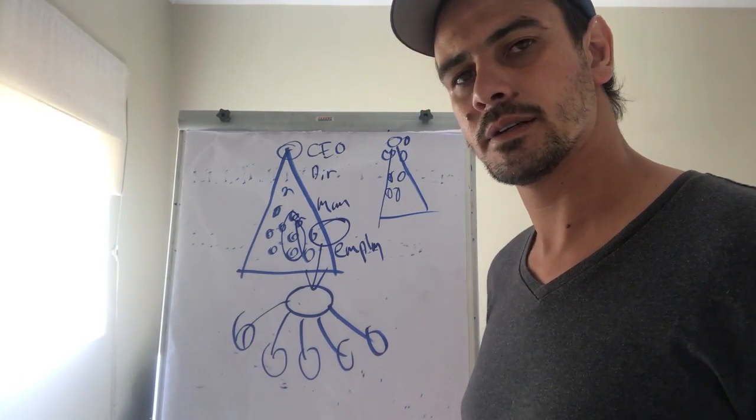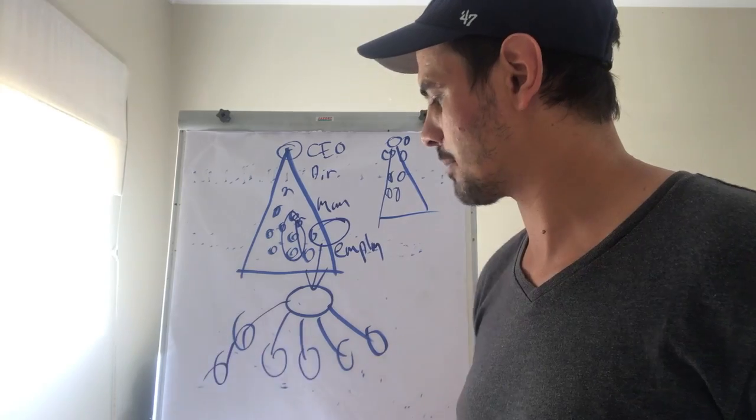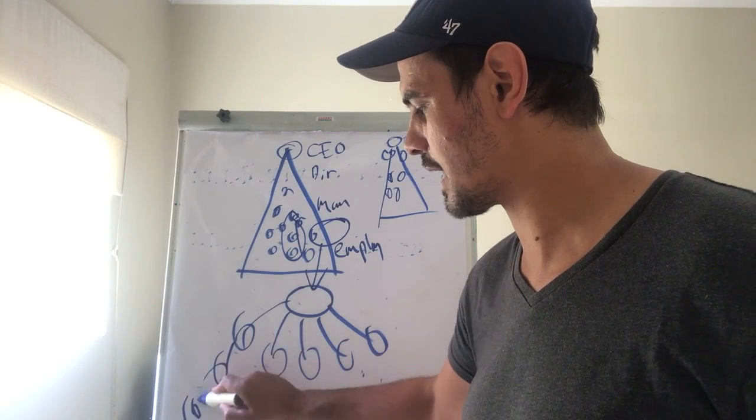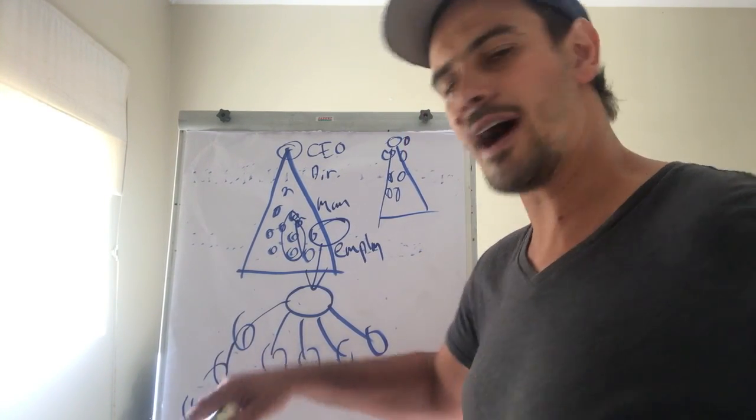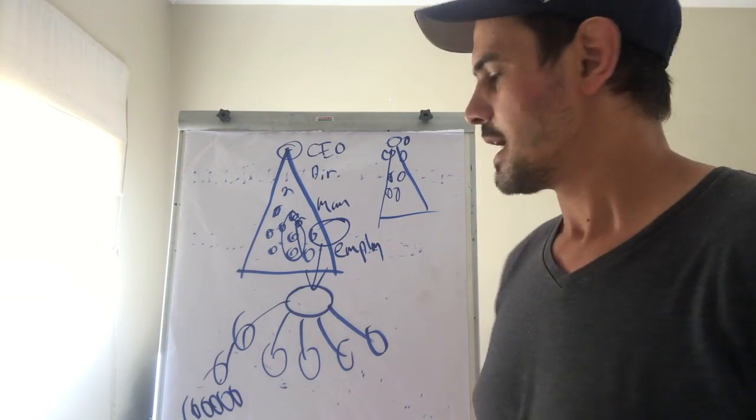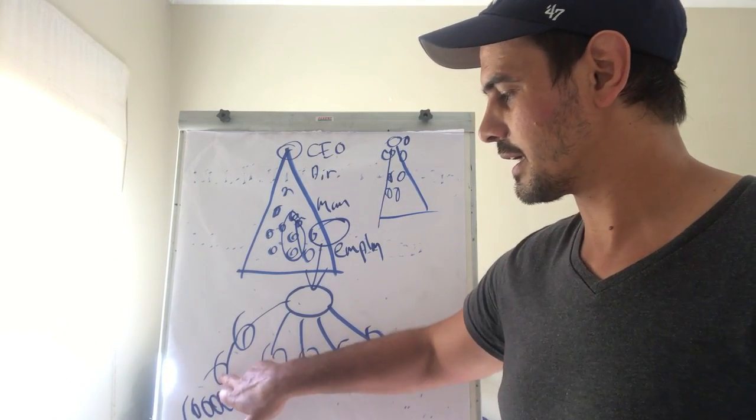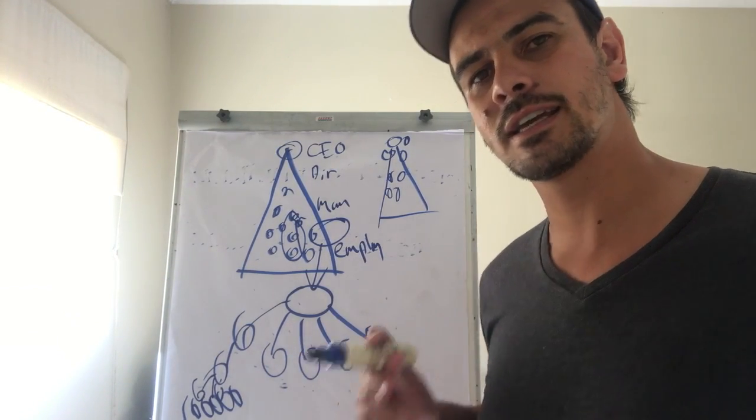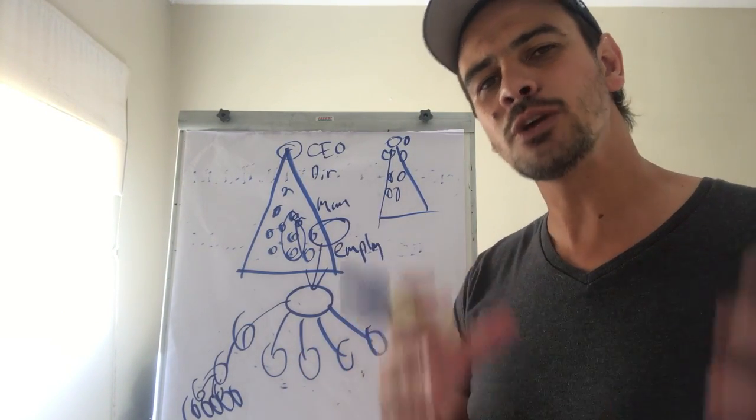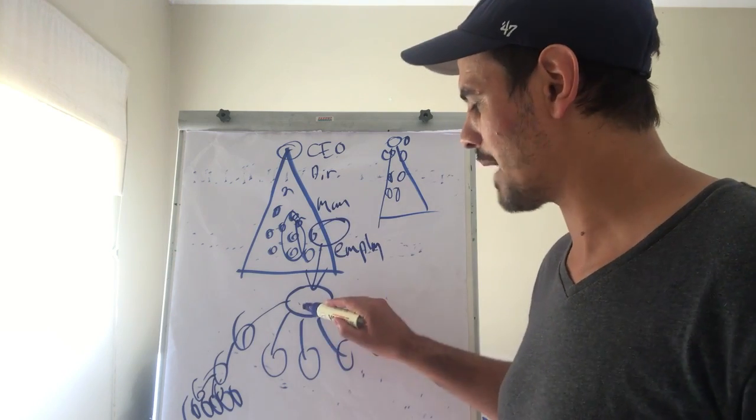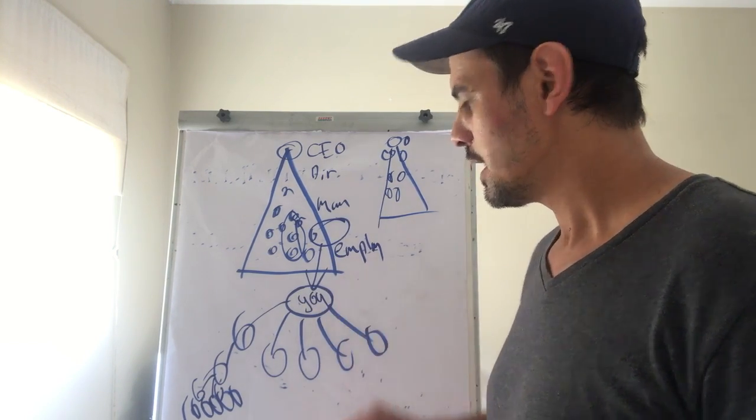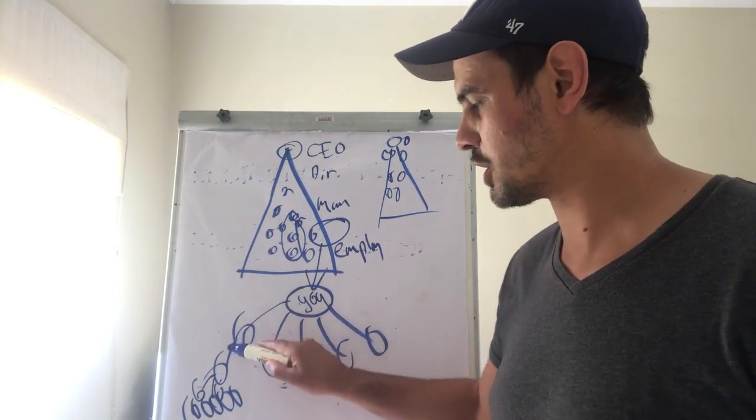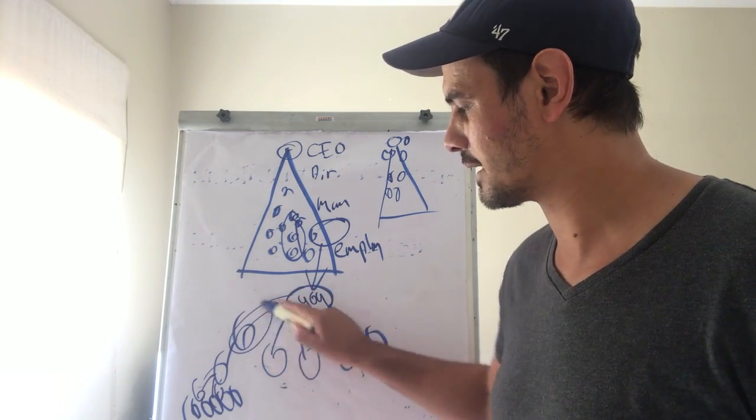So let's say for instance someone signs you up and you are only in his first organization. Let's say person one signs a person up and this guy builds an organization of a hundred thousand people but this guy spreads his volume over five different legs. Guess what will happen - he will then get paid much more money than you...